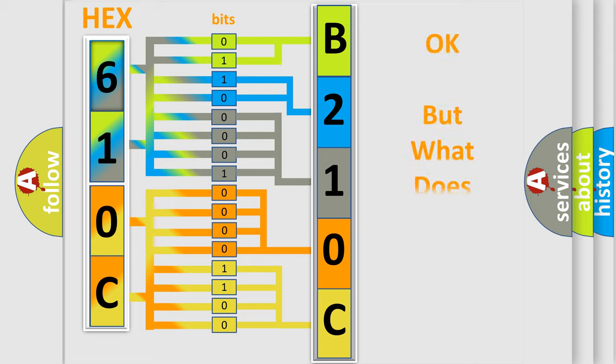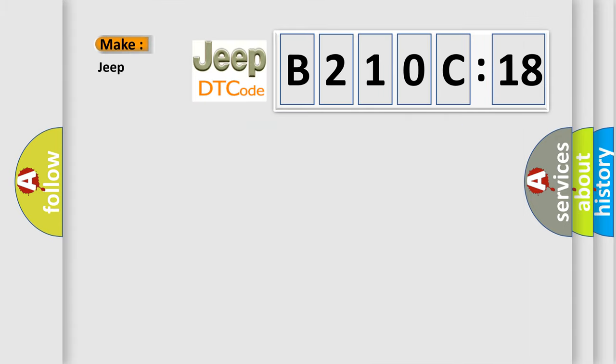The number itself does not make sense to us if we cannot assign information about what it actually expresses. So, what does the diagnostic trouble code B210C18 interpret specifically for Jeep car manufacturers?